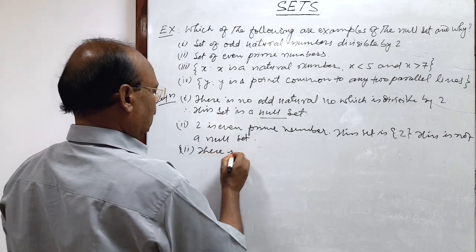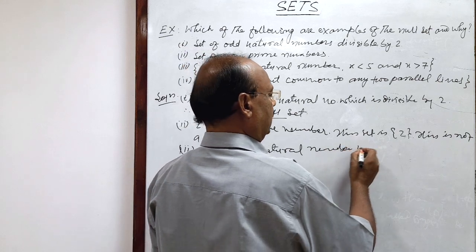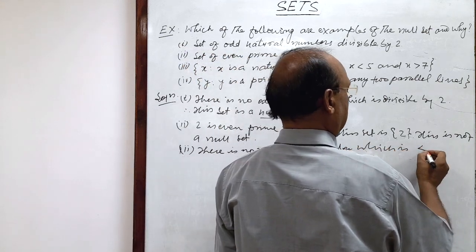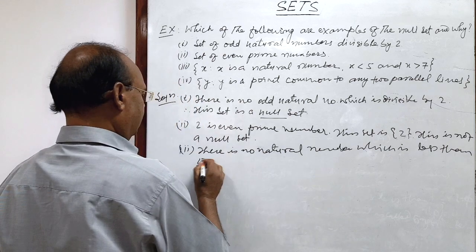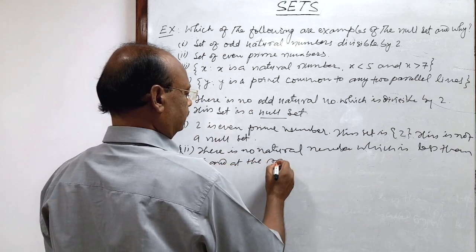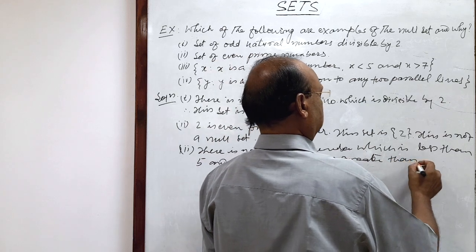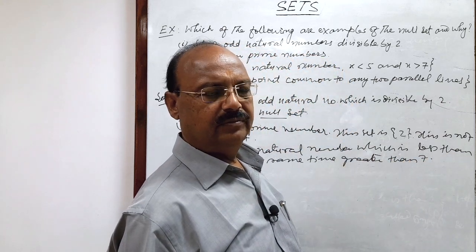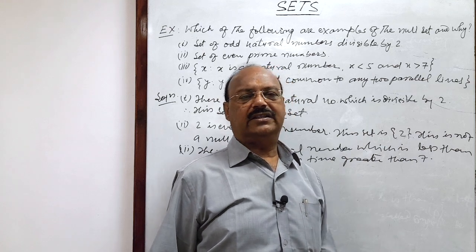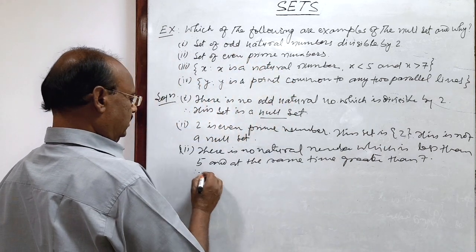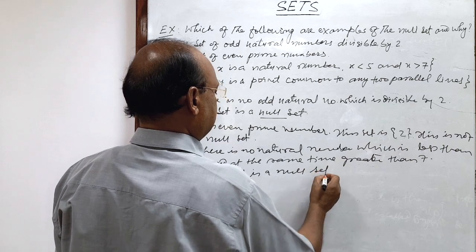There is no natural number, or write clearly, this is less than 5 and at the same time, this is not possible, greater than 7. If it is less than 5, then it is less than 5. If it is greater than 7, it is greater than 7. So this is not possible, that a natural number is less than 5 as well as greater than 7. Therefore this set is a null set, therefore this set is a null set.